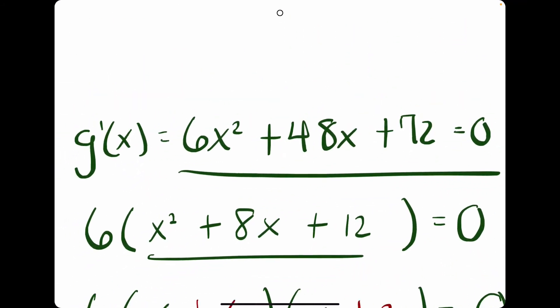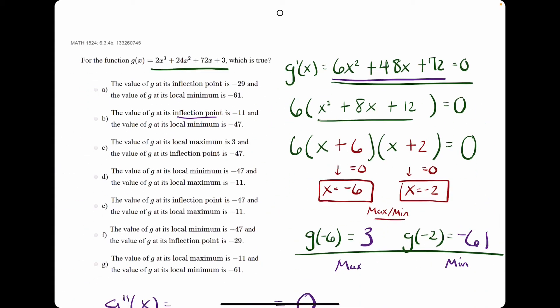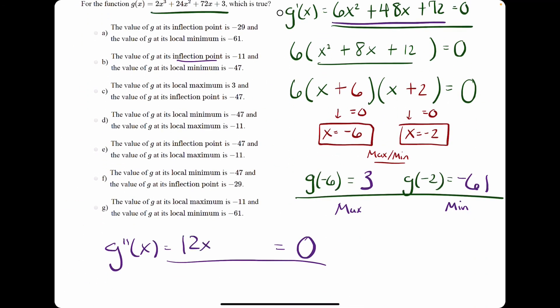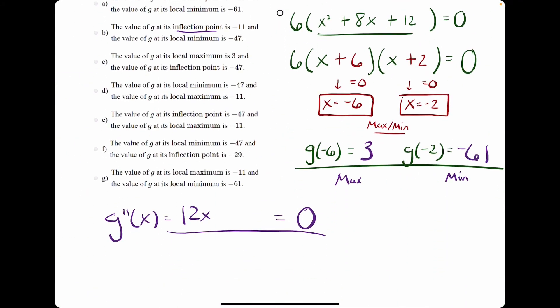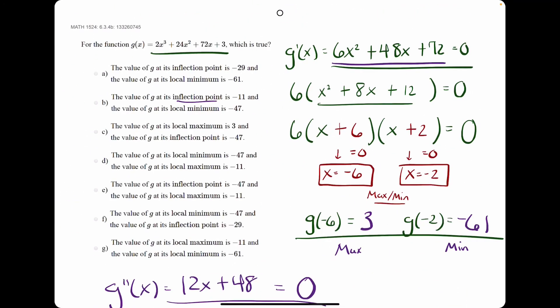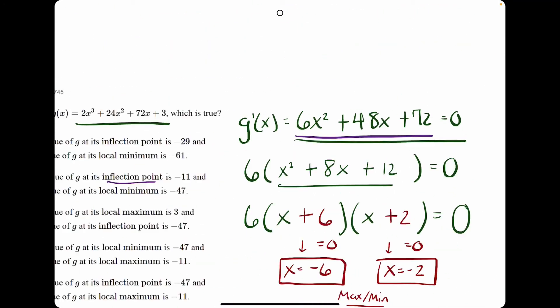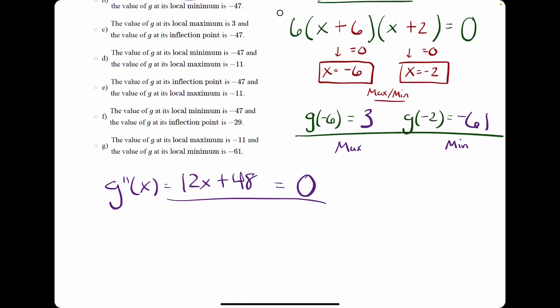We find the second derivative by looking at the first derivative and taking its derivative. 6x squared will go to 12x, plus 48x will go to plus 48, and 72 will go to 0. Now we have 12x equals negative 48. We divide by 12 and we get negative 4 for x. This is the location of our inflection point.